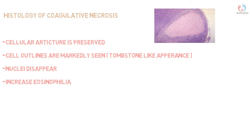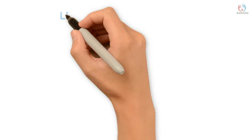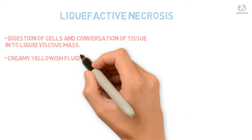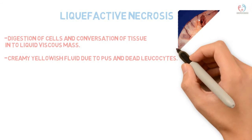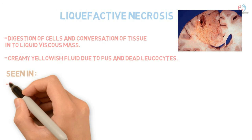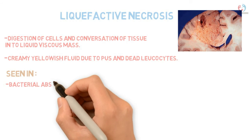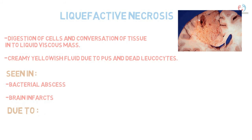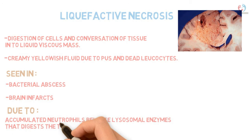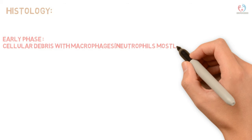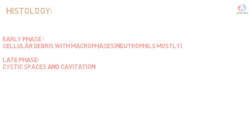Liquefactive necrosis is due to digestion of cells and conversion of tissue into a liquid viscous mass with yellowish color from pus and dead leukocyte debris. It is seen in bacterial abscesses of the brain and brain infarcts. Accumulated neutrophils release lysosomal proteolytic enzymes that digest the tissue into a dead liquid mass. In histological sections, dense accumulation of neutrophils and cellular debris are seen, with cavitation and empty spaces in late phases.